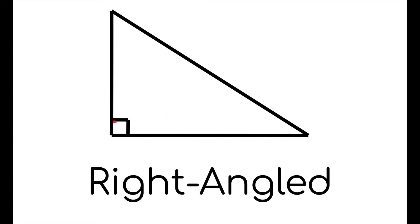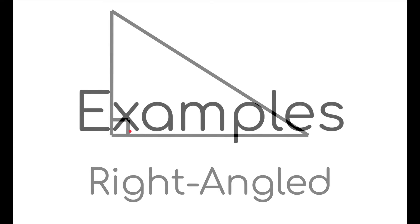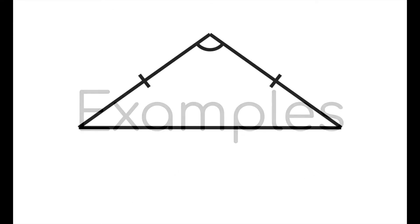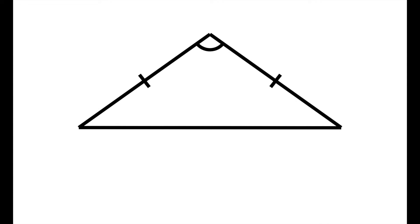A right angle triangle is a triangle with one angle that is exactly 90 degrees. Now let's have some examples — what kind of triangle is this?